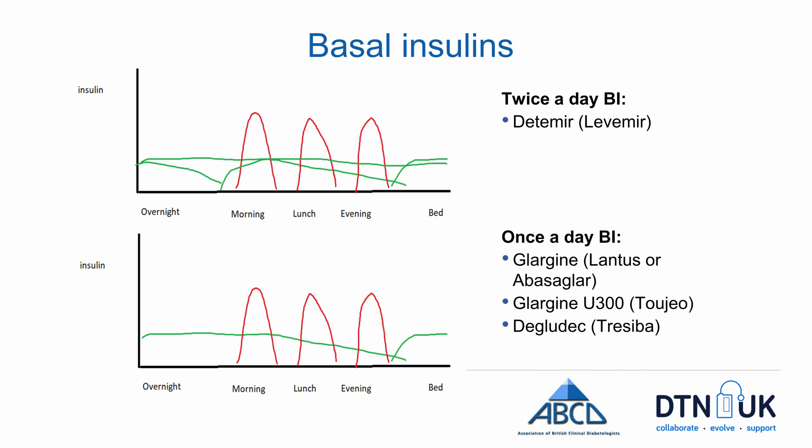Some of the common basal insulins include glulisine or Levemir, which are usually taken twice a day. There are also insulins given once a day such as glargine, otherwise known as Lantus or Abasaglar, and more modern insulins such as glargine U300, otherwise known as Toujeo, or degludec, otherwise known as Tresiba.